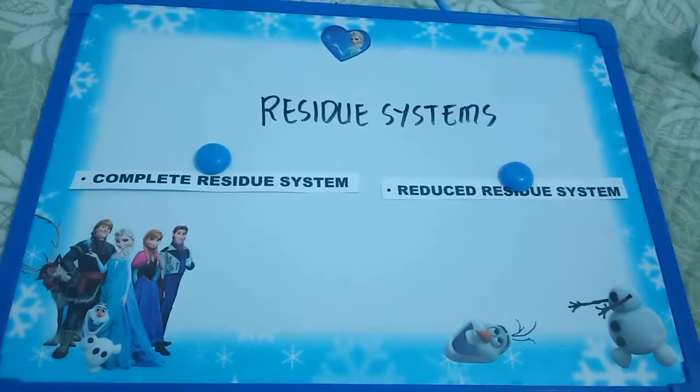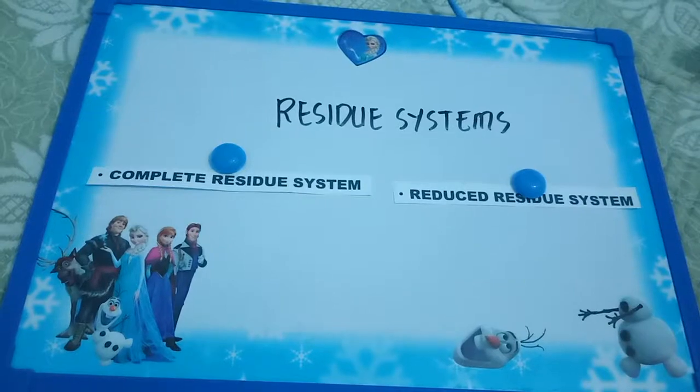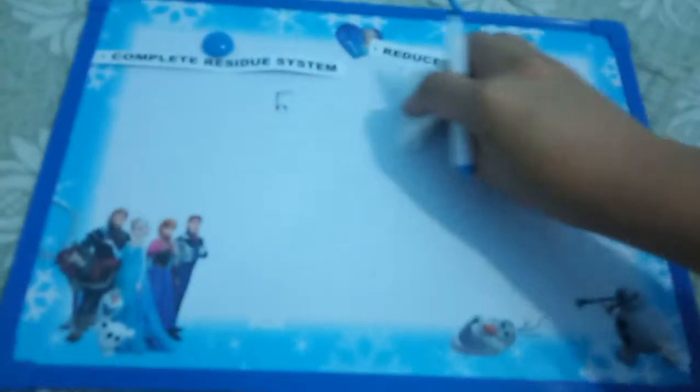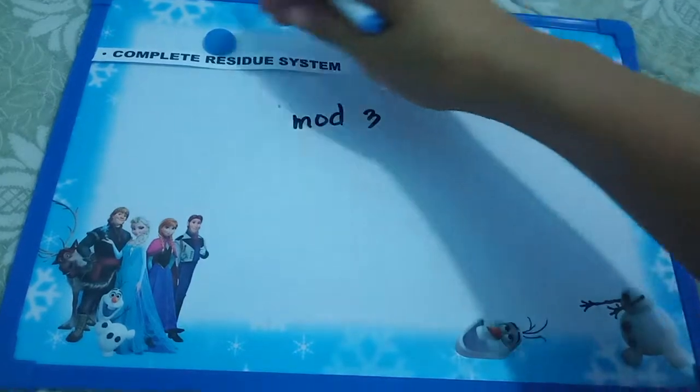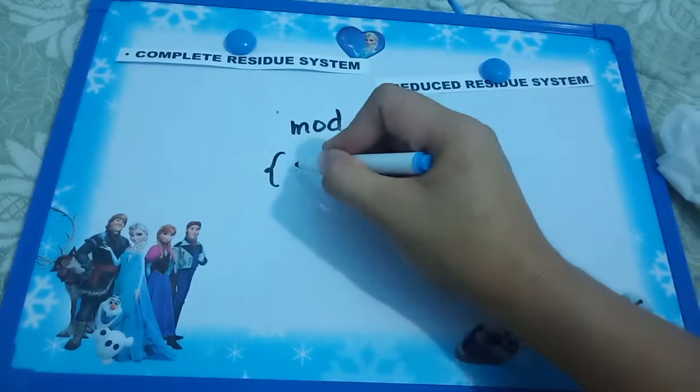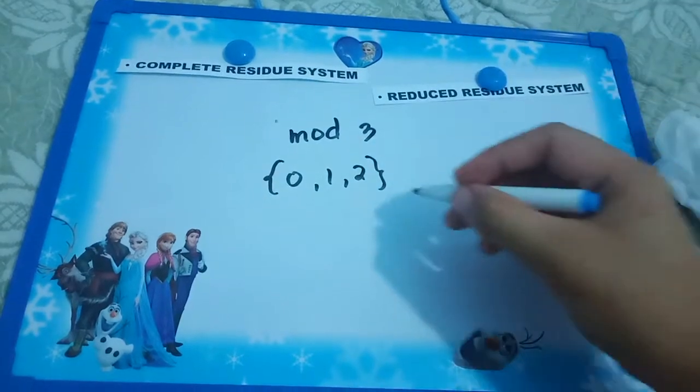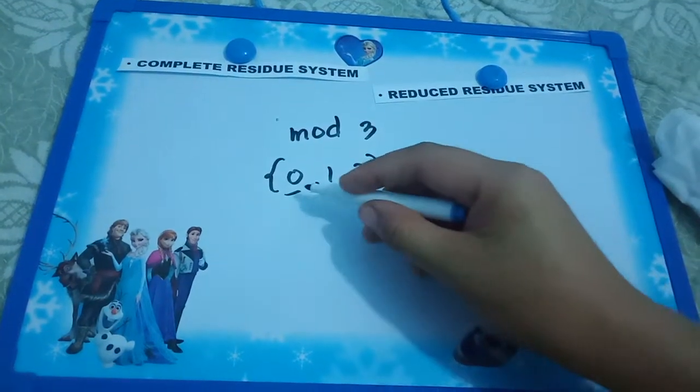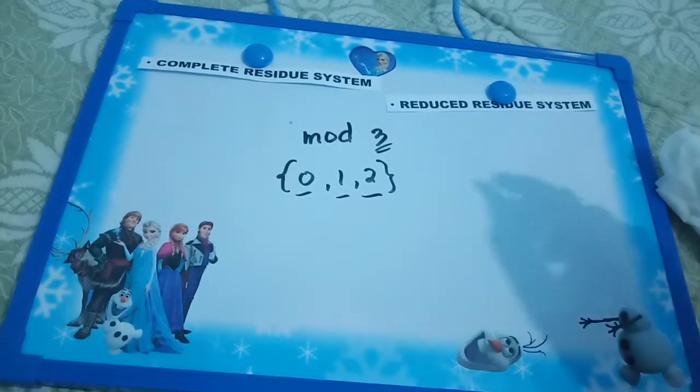To give you an intuitive idea of this residual system, let's take mod 3. The residual system of mod 3 consists of, for example, 0, 1, and 2, because these numbers 0, 1, and 2 are all possible remainders you can get when you divide something by 3.